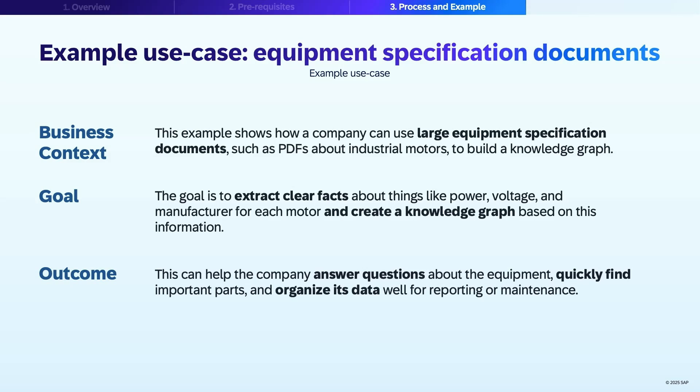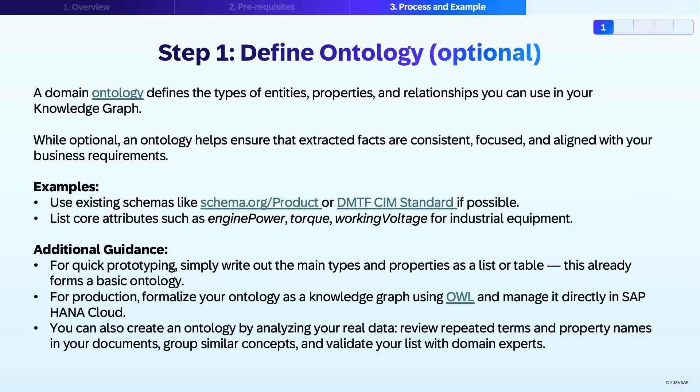This can help the company answer questions about the equipment quickly, find important parts, and organize its data well for reporting or maintenance. The example code takes these real-world documents, extracts the facts, and loads them into a knowledge graph that anyone in the company can search or use for business purposes.